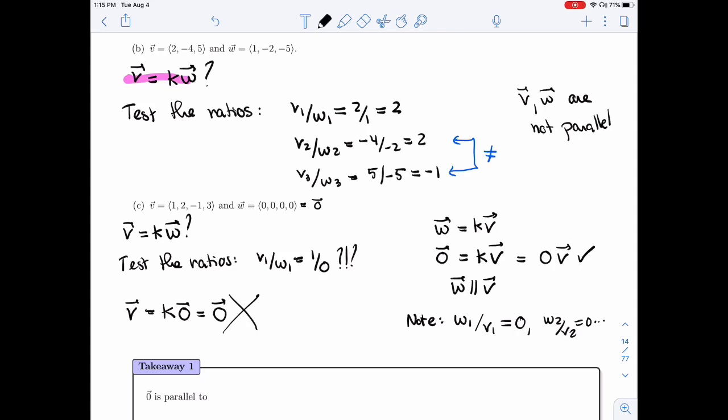One way of looking at ratios doesn't work because you have zero in the denominator, flip it, look at the other one, and you'll see if it works or not.